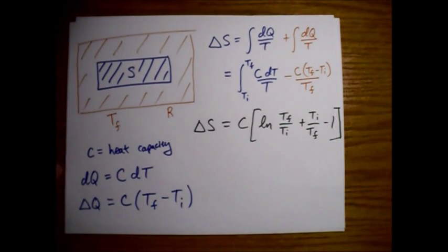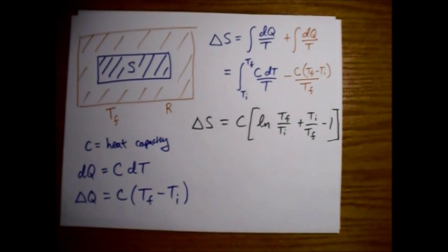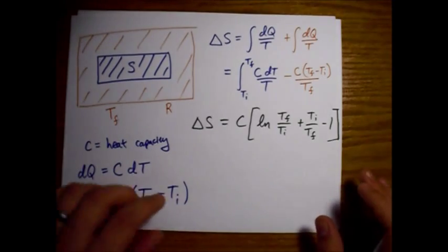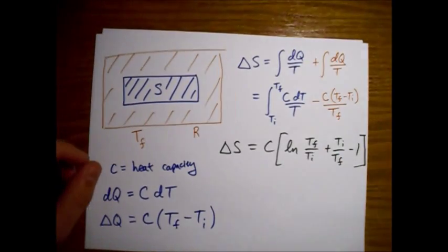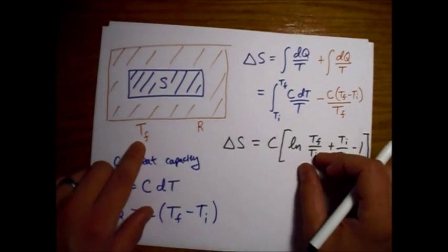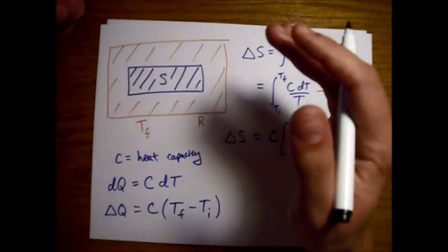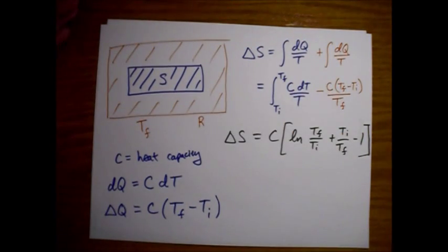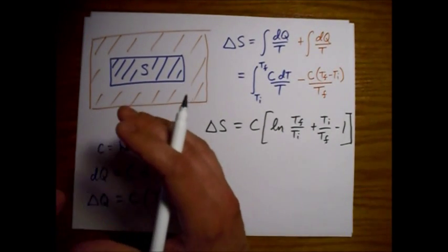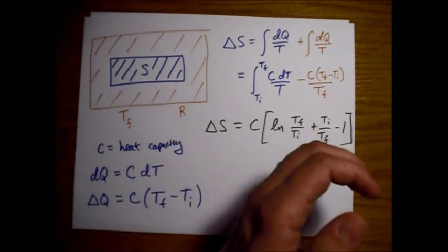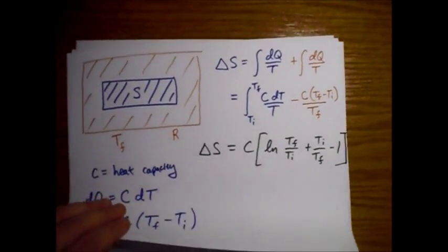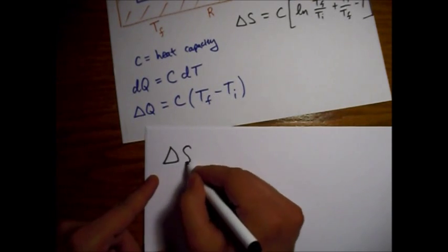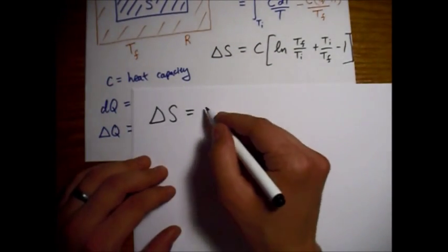In talking about reversible processes, let's just look at what happens if we're able to make this zero. So what would happen if we, instead of just putting the system in contact with one thermal reservoir at Tf, what if we first warm it up with respect to a different reservoir that is at some lower temperature, and then we take it and put it in contact with this reservoir at the final temperature. So let's go ahead and calculate the change in entropy for that situation.